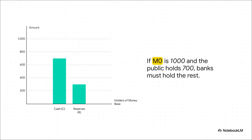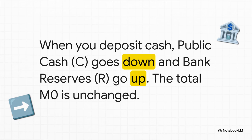Let's make this real with an example. Imagine the central bank has printed exactly 1,000 shekels in total. If you and I and everyone else are holding 700 of those shekels in our pockets, then by definition the other 300 must be sitting in bank vaults as reserves — 700 plus 300 gets us right back to 1,000. Now, if you take 100 shekels out of your wallet and deposit it into your bank account, C goes down by 100 and R goes up by 100. The total M0 stays exactly the same. We haven't created or destroyed money — we've just moved it from one bucket to the other.